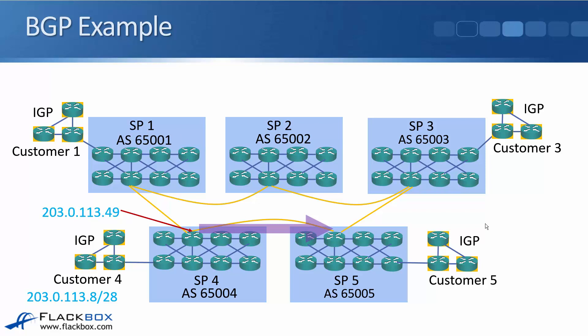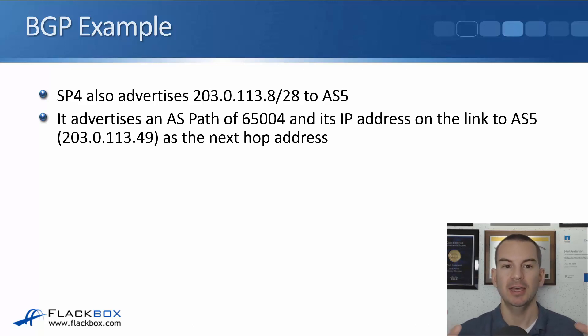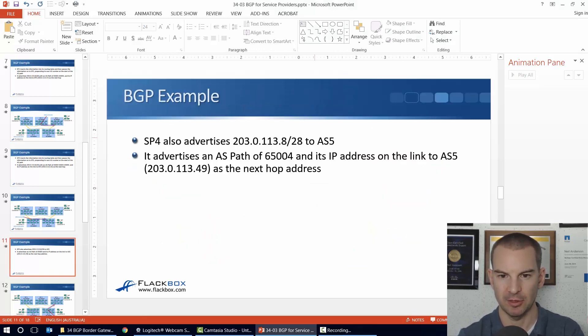SP3 has now learned the top path, but there's also a bottom path available. SP4 doesn't just advertise to SP1 — it's also running BGP to SP5. The link to SP5 uses a different IP address: 203.0.113.49. SP4 advertises 203.0.113.8/29 to SP5 with an AS path of 65004 and next hop 203.0.113.49.